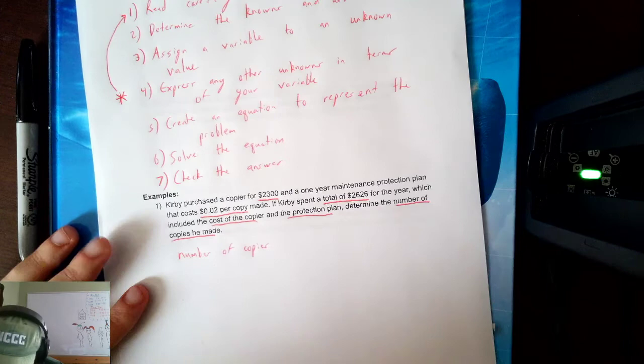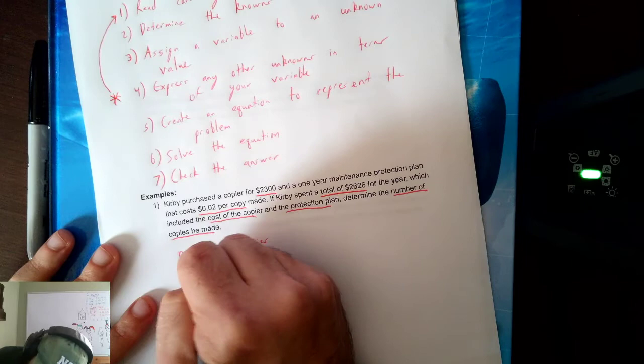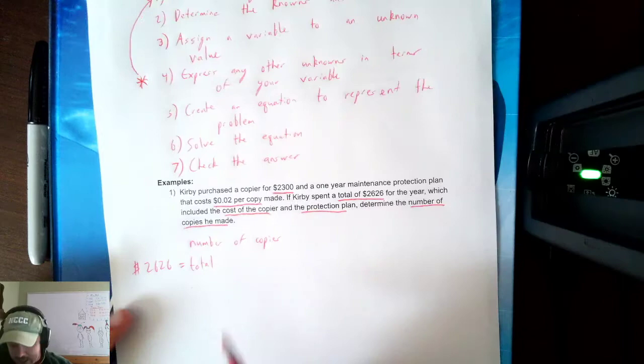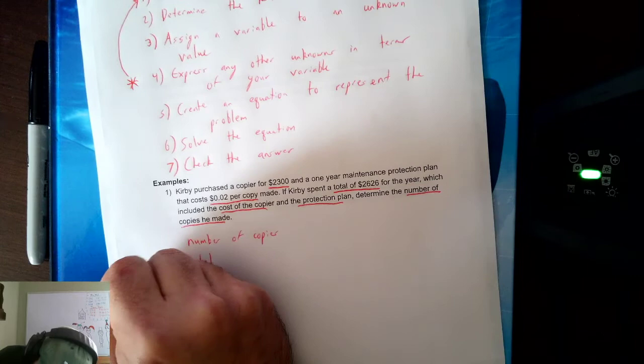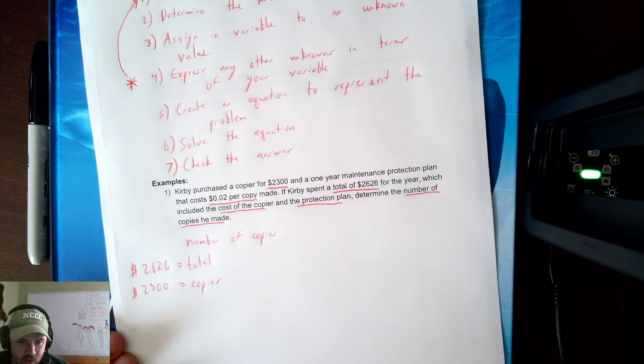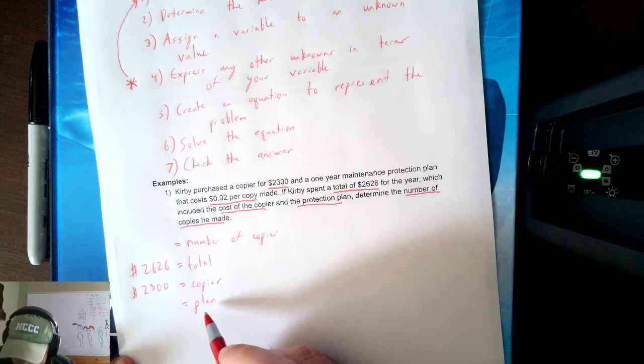Now I know some things. I know the total was $2,626. I know the copier costs $2,300. The protection plan costs two cents per copy made, so I don't know how much the plan costs yet — I need to know the number of copies in order to know the plan cost.